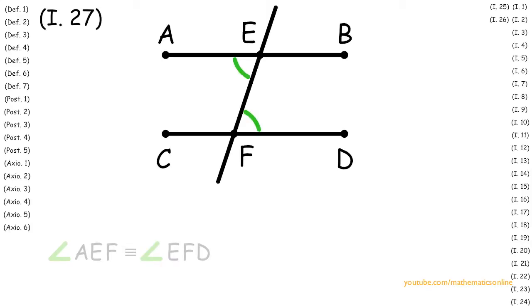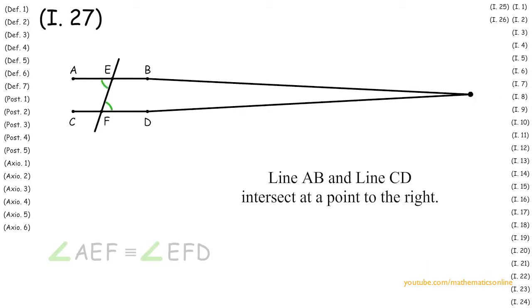If this is not true, then the other possibility is that both lines are not parallel and intersect at a point. So let's assume that line AB and line CD intersect at point G when both lines are extended to the right.